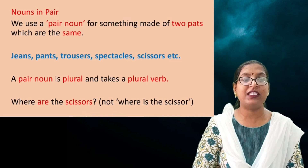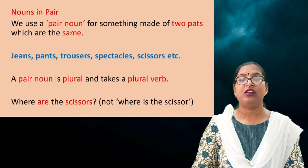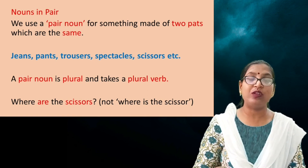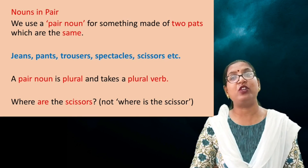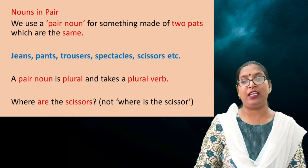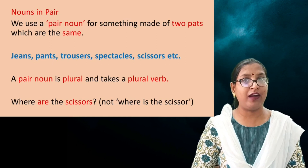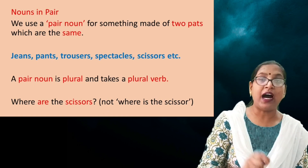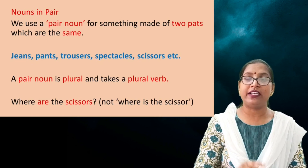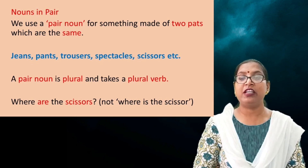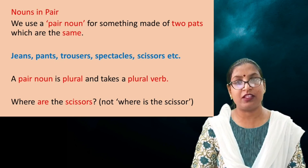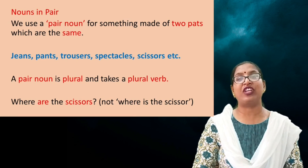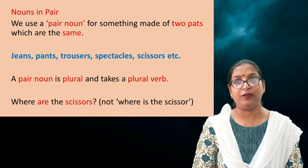Another important point: a pair noun is plural and takes a plural verb. A pair noun is always used in plural form and we use a plural verb with it. For example, 'Where are the scissors?' — 'scissors' is a pair noun and 'are' is a plural verb. We cannot say 'Where is the scissors?' — that would be wrong. Dear children, I hope it is clear to you how to change from singular to plural. Thank you.